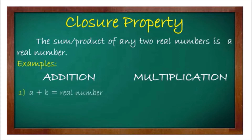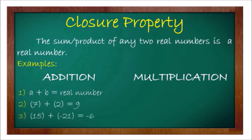For examples under addition: a plus b equals a real number, since a and b are real numbers. Positive 7 plus positive 2 equals positive 9. Positive 15 plus negative 21 equals negative 6. The numbers 7 and 2 are real numbers, as are 15 and negative 21, so their answers — 9 and negative 6 — are also real numbers.